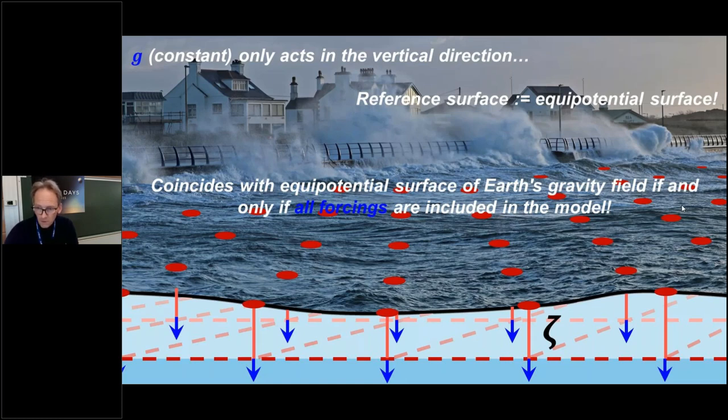Then of course the key question is: in case you would exploit a satellite radar altimeter and measure the height of the sea surface relative with respect to an ellipsoid, and you subtract this dynamic topography, will you then end up with the geoid height? And this question is only the case if and only if all forcings in the model are included.